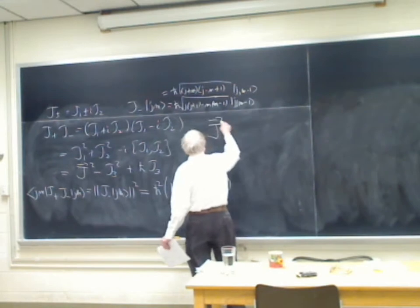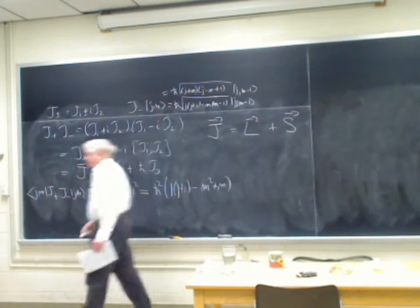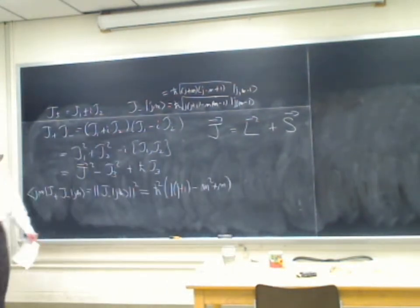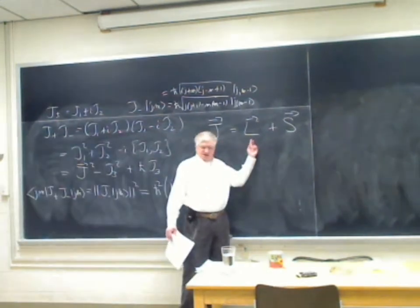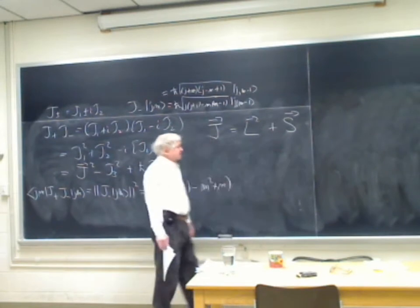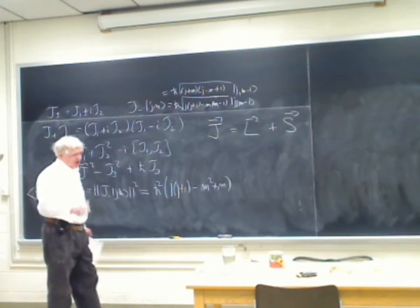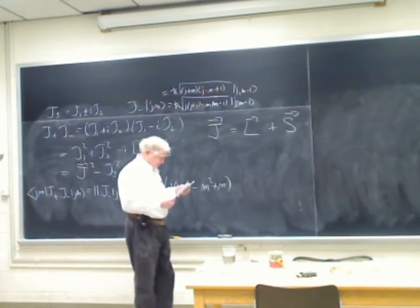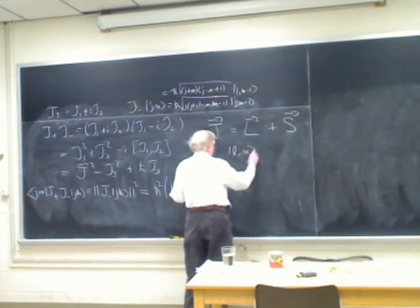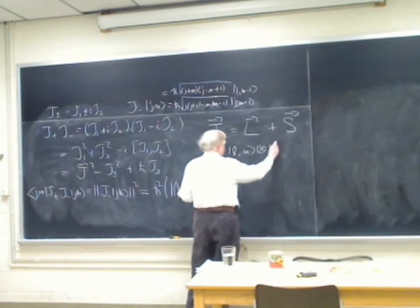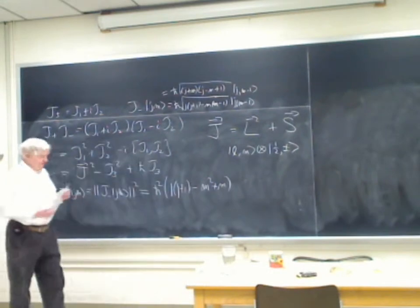An electron — or for that matter, a quark or a neutrino — will have automatically an orbital angular momentum described by an operator L, and a spin angular momentum described by a spin operator which is just ℏ/2 times the Pauli matrices. Its angular momentum eigenstates are |lm⟩ direct product with |½, ±⟩. That's the clearest way to think about it.